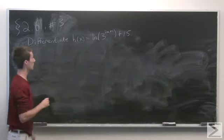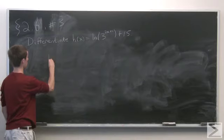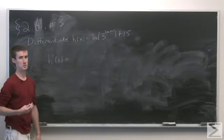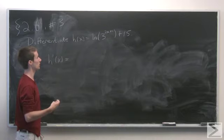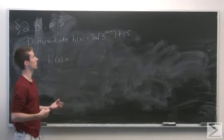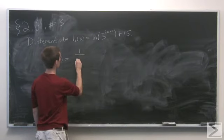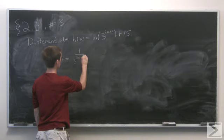So there's going to be a couple different steps here. First thing we want to do is just use the chain rule. So we have natural log of the function 3 to the 2x plus 1. So start out 1 over 3 to the 2x plus 1.